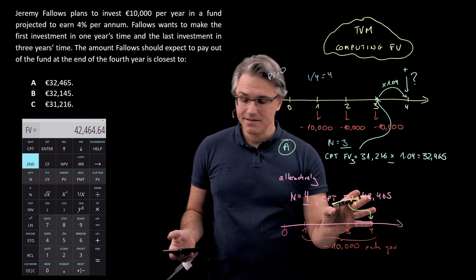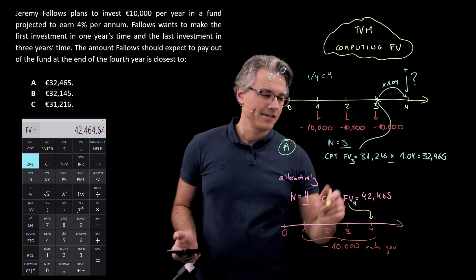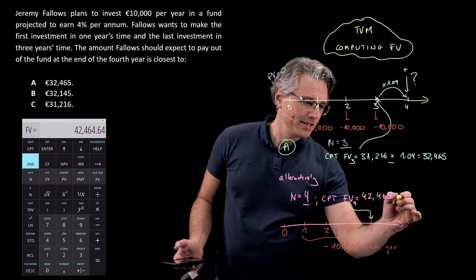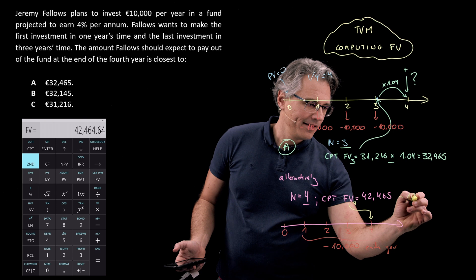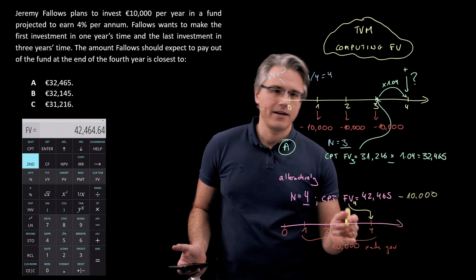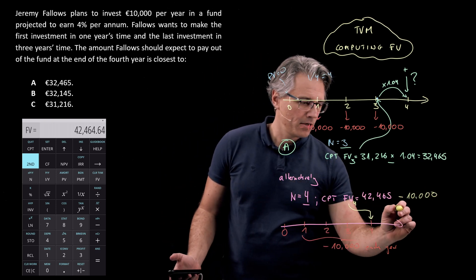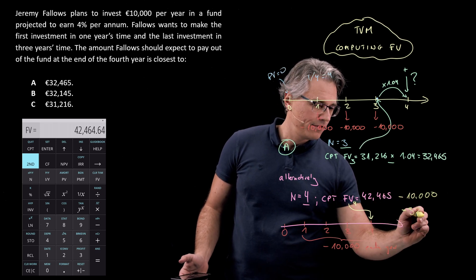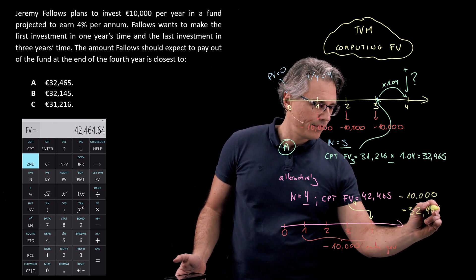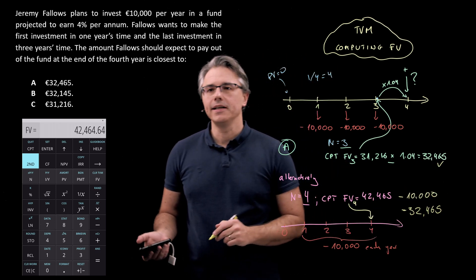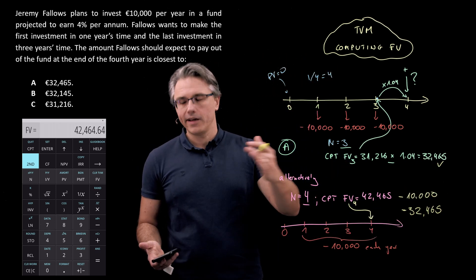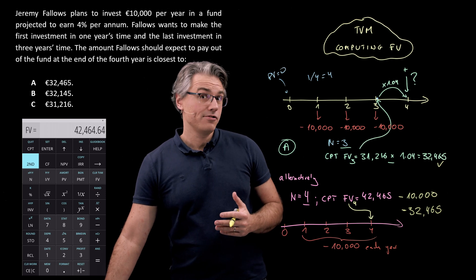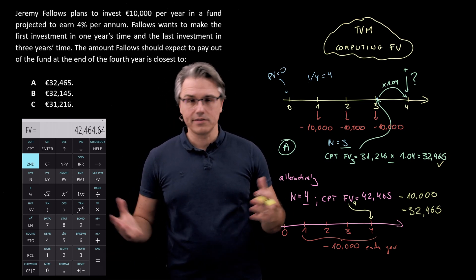So what you could do is compute this rather than the other method but manually deduct the excess 10,000, the unnecessary 10,000, which would obviously get you to 32,465 which we know is the answer anyway. And that's another way to work around the problem which you should be also comfortable with because at the end of the day